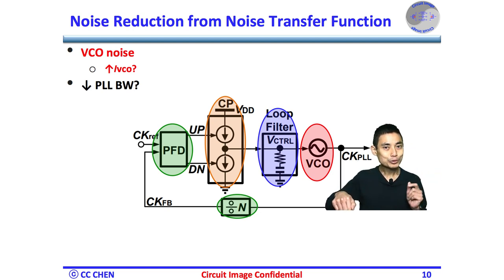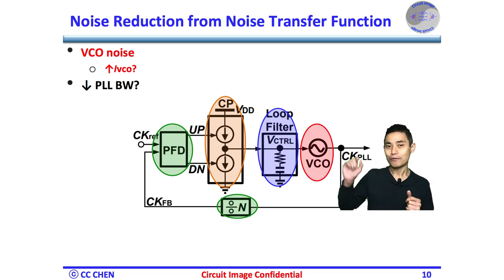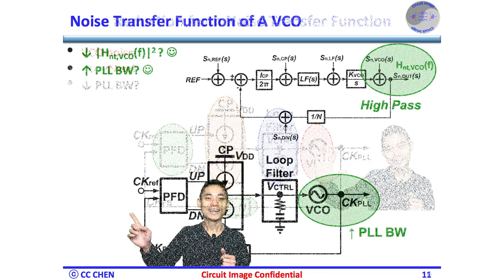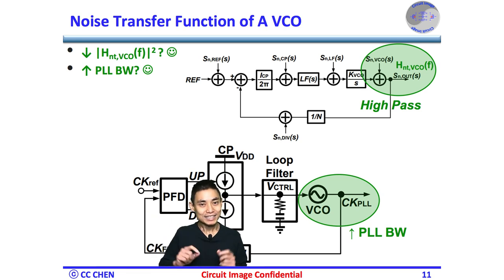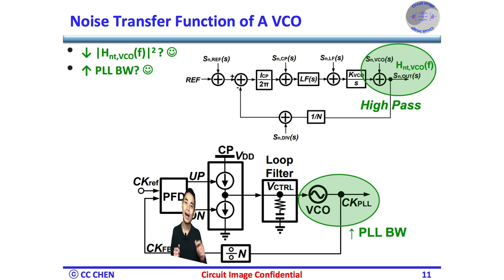Does that mean we should reduce the PLL bandwidth to filter the VCO noise? Think about the VCO noise transfer function diagram for 5 seconds. Incorrect and opposite. Let's intuitively think about the VCO transfer function without any equation. First, what's the PLL dynamic response in frequency?